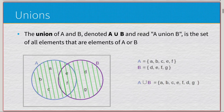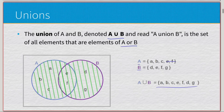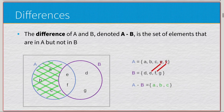Moving on, we have unions. The union of A and B, denoted as such, is read as 'A union B' and is a set of all elements that are in A or B. Combining set A {a, b, c, f} and set B {d, e, f, g}, we remove any duplicates — e and f appear in both — and get {a, b, c, d, e, f, g}. On a Venn diagram, just fill in both sets.